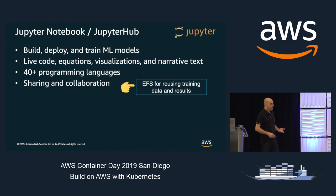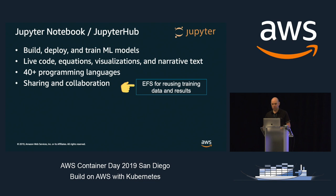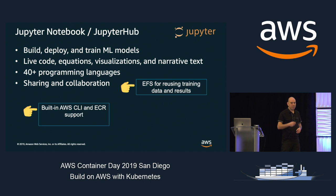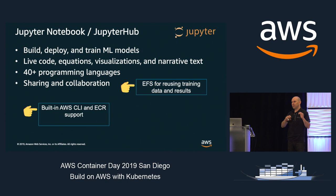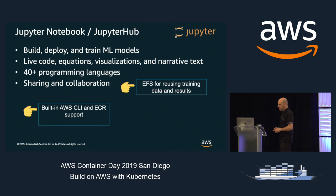We introduced support for EFS as a way to share code and data in AWS — you can point to EFS from code running in Jupyter and share that with others. We also built in the AWS CLI so you don't have to manually bring it in every time, and introduced ECR (Elastic Container Registry) support. The whole process of logging in, getting credentials, and fetching Docker images from ECR into the notebook to run your containerized model is now much easier within the notebook itself.